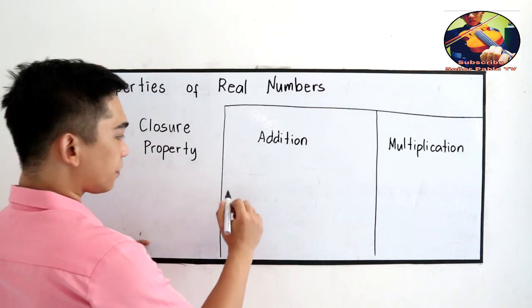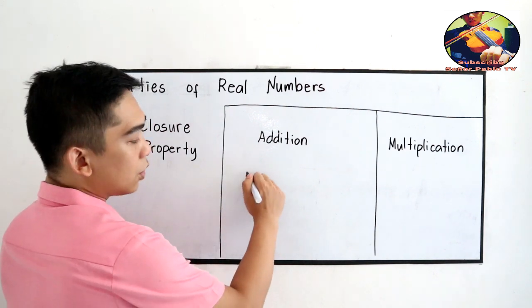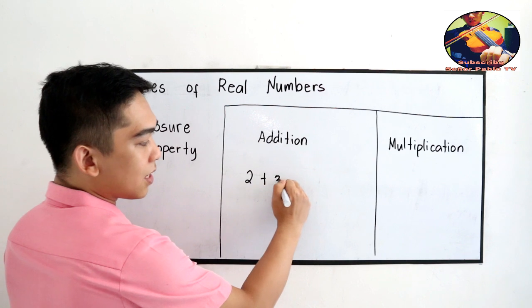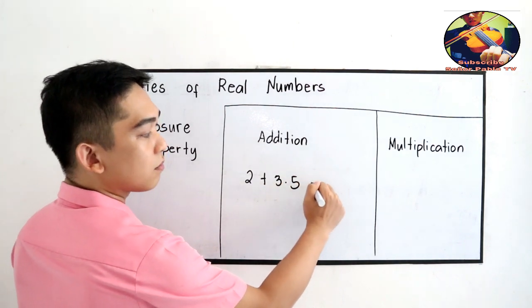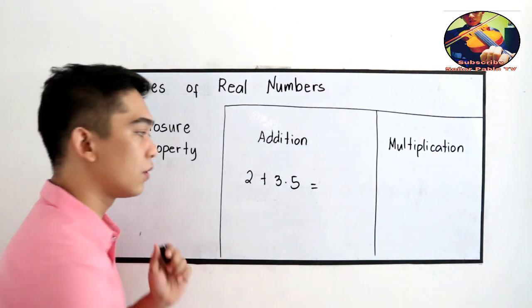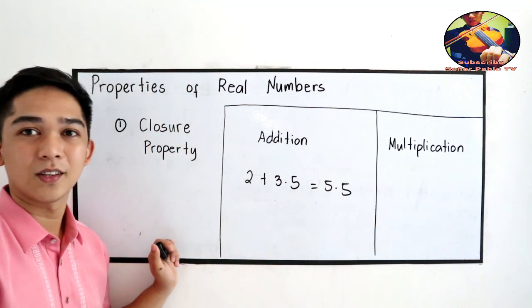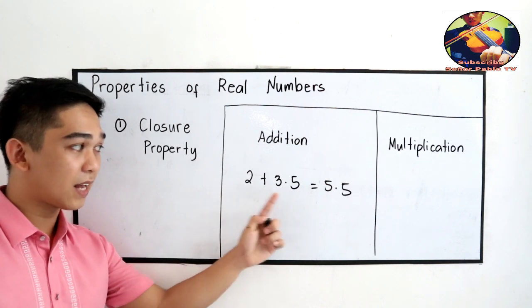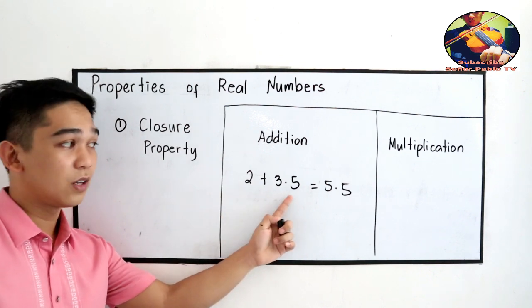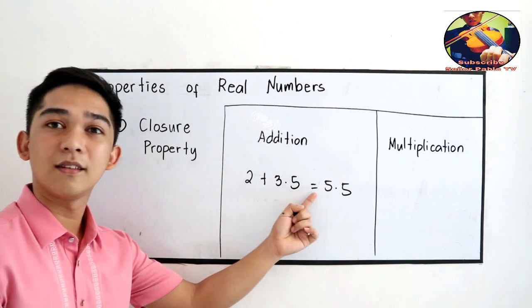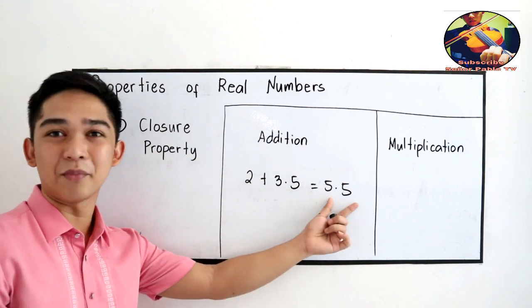If I have 2 plus 3.5, that is equal to 5.5. So a real number and another real number. If you're going to add, then the sum is a real number also.